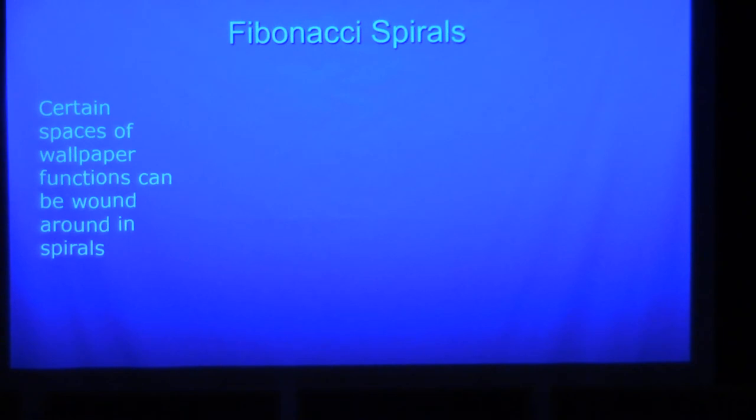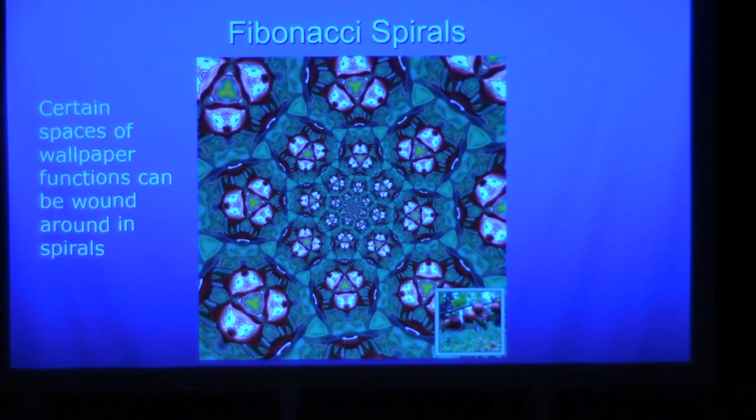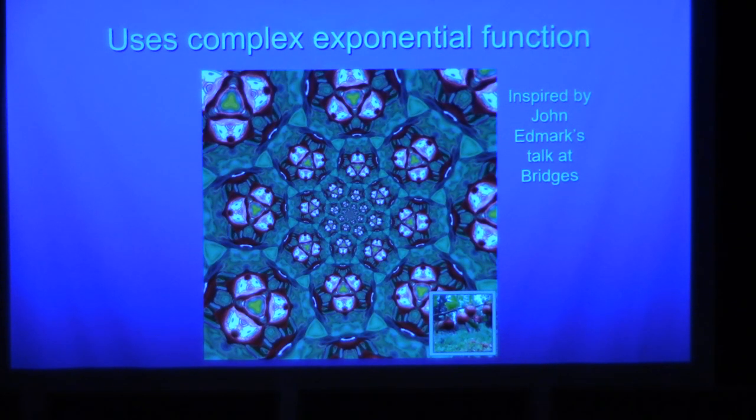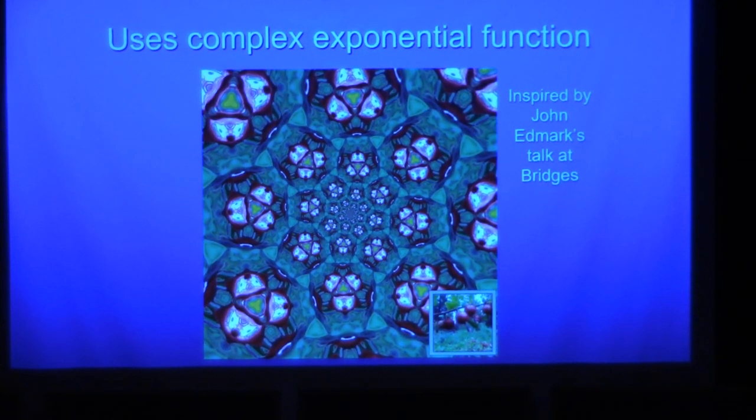My almost last topic is about Fibonacci spirals that I've been doing recently. If you got the right wallpaper, it's got to be oriented the right way. You can use the complex exponential map to wind that around the plane and get a Fibonacci spiral like this. It's the complex exponential. I owe a lot to John Edmark. How many people have watched John Edmark's viral videos called Bloom?